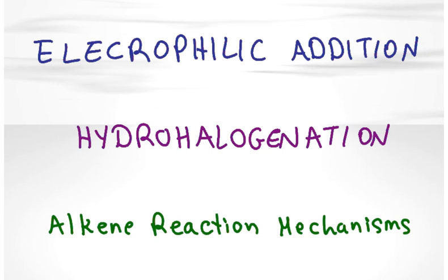I will take you through the hydrohalogenation alkene reaction mechanism. Hydrohalogenation simply means adding HX to an alkene or to a carbon to carbon double bond.